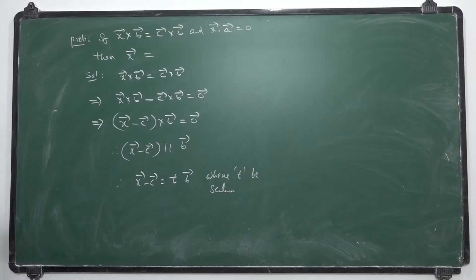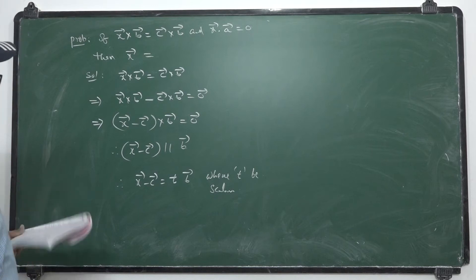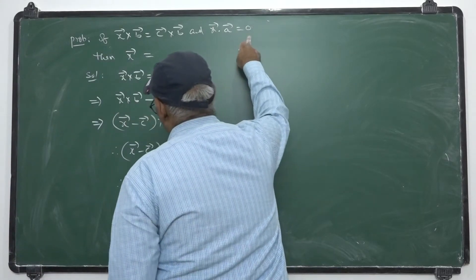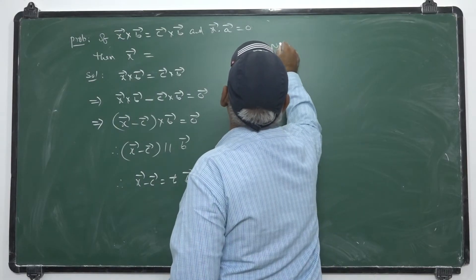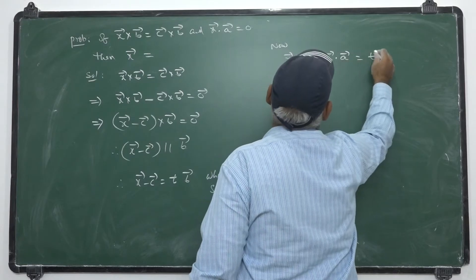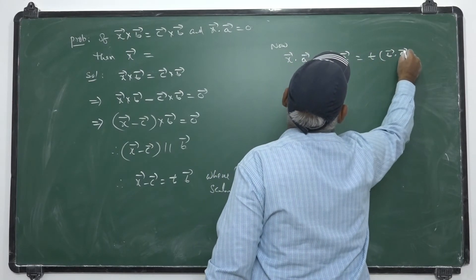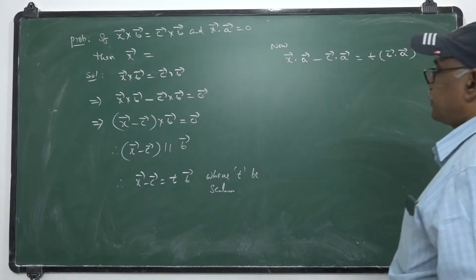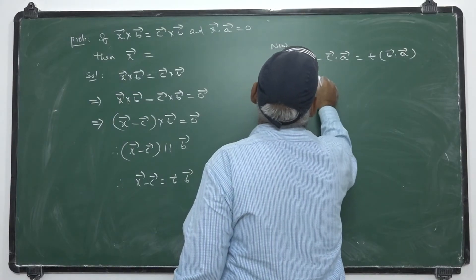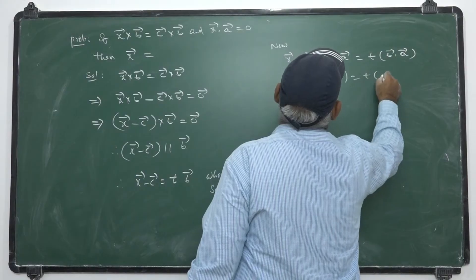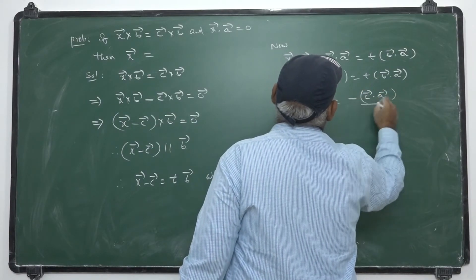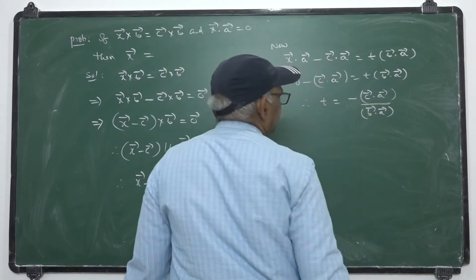So x̄ - c̄ = t·b̄. Now, given x̄ · ā = 0. Taking dot product with ā on both sides: x̄·ā - c̄·ā = t(b̄·ā). That is, x̄·ā - c̄·ā = t(b̄·ā). But x̄·ā = 0, so -c̄·ā = t(b̄·ā). Therefore t = -(c̄·ā)/(b̄·ā). This is a scalar and this is also a scalar, hence t becomes a scalar.